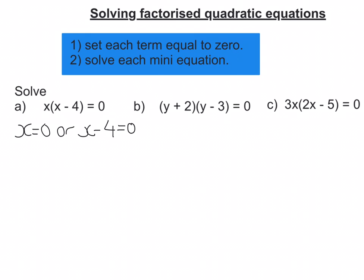And then we need to solve these two mini equations. So x equals 0, well that's already solved. Or x minus 4 equals 0. Well to solve that, to work out what x is, I need to move the 4 onto the other side by adding to both sides. And we're left with x equals 0 or x equals 4.